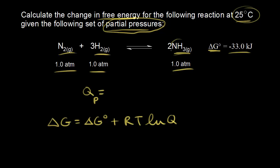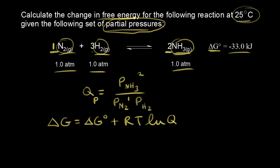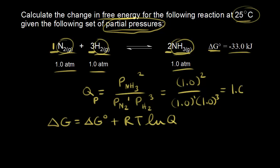Q sub P equals the partial pressure of ammonia raised to the power of its coefficient — the second power — over the partial pressure of nitrogen raised to the first power, times the partial pressure of hydrogen raised to the third power. Everything is at one atmosphere, so this is 1.0 squared over 1.0 to the first times 1.0 to the third, which of course equals one. So at this moment in time, our reaction quotient Q is equal to one.